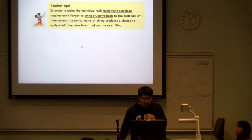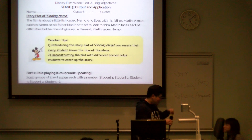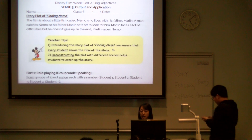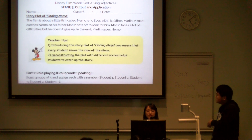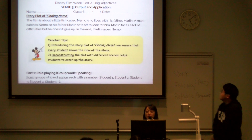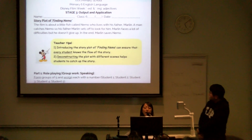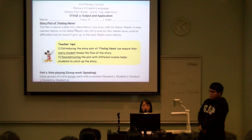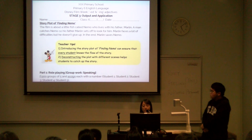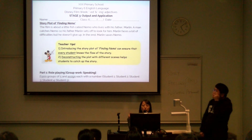Finding Nemo appears again in groups and comes to the output stage. Now I will introduce Stage 3, which is the output and the application. Before we start this output stage, we will first introduce the story plots of Finding Nemo, which can ensure that every student in the class knows the flow of the story. The story plots are taken from the textbook and we made some modifications. We can use corpus along with the textbook, which will be more authentic for us.